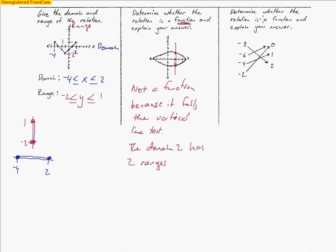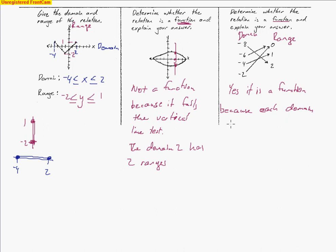The last question shows another relation and asks if it's a function. Looking at the domains — the starting values, with arrows representing the range outputs — negative 6 and negative 2 both map to 0, but that's okay, as long as no single domain has two different range values. Each domain here has exactly one range, so yes, it is a function. Those are the types of problems you'll see on this week's test.